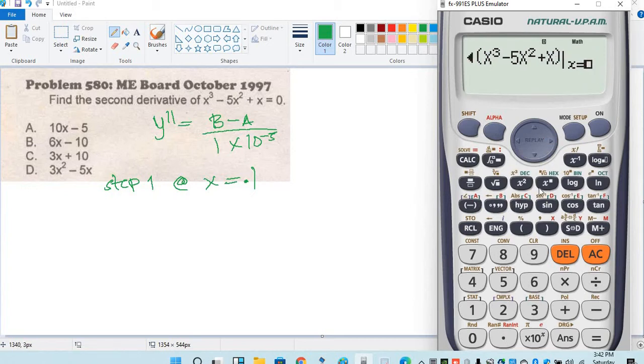Let's say x is equal to 0.1, and the result is 3 over 100.